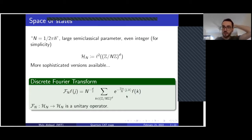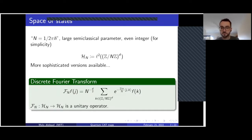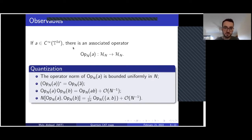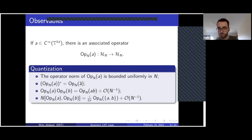The main thing is that we don't really care about the actual construction of the space of states. What is important is the operators we are going to define on it and how they interact. First, I want to quantize observables. There is a procedure — which I will not describe in detail — that associates to every smooth function on the 2d-dimensional torus an operator on the space of states. This procedure is called quantization.